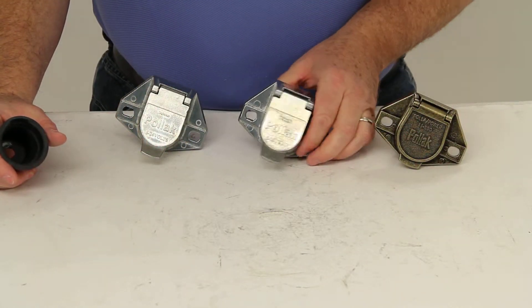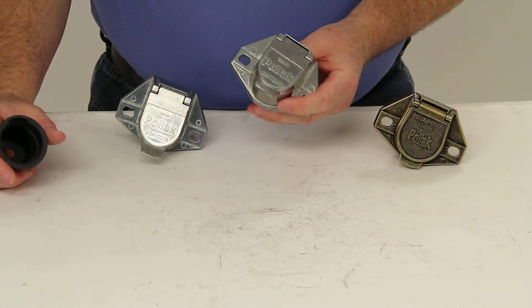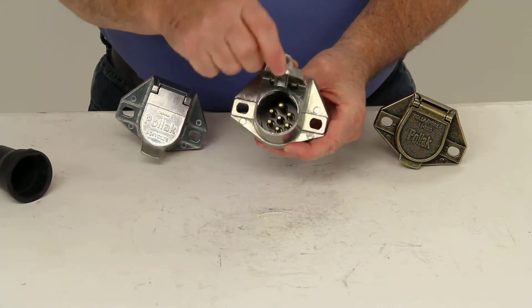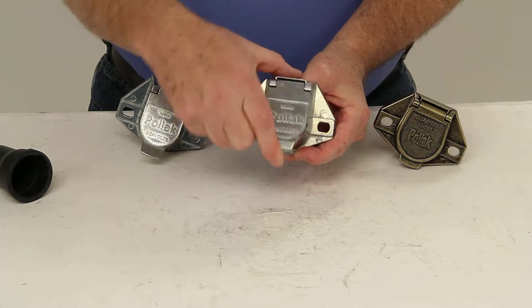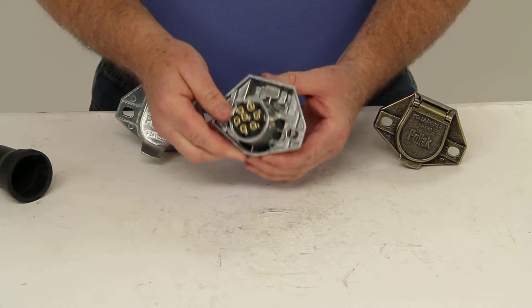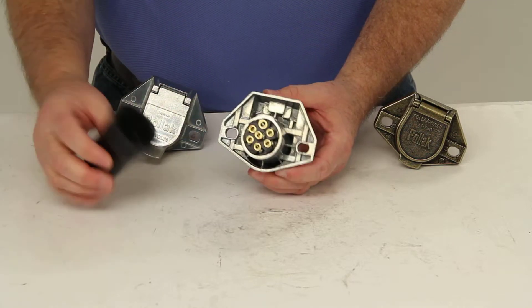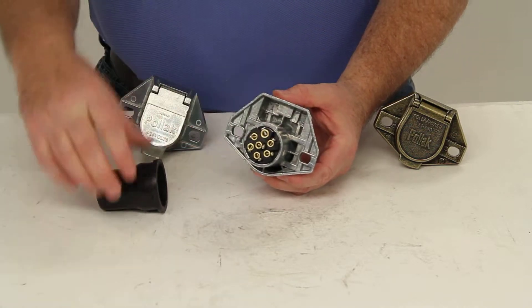It will also work on the Pollak PK11720. This is the seven-way round vehicle end socket. And again if you look at the back, here's where all your wire connections would be. And again it has the raised portion at the top.